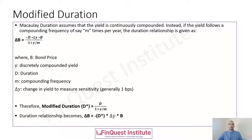Next is modified duration. Modified duration is related to Macaulay duration. Macaulay duration assumes a continuously compounded yield. If we want to switch to discrete compounding — for example, semi-annual compounding — we use modified duration. The formula for change in bond price uses B as the original bond price, y as the discretely compounded yield, T as the Macaulay duration, m as the compounding frequency (semi-annual, quarterly, monthly, etc.), and delta y as the change in yield.